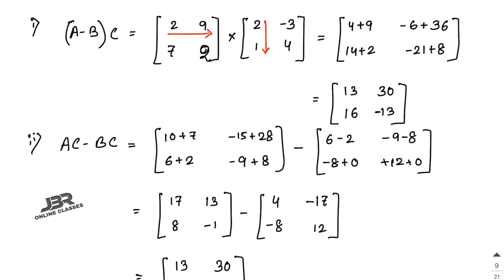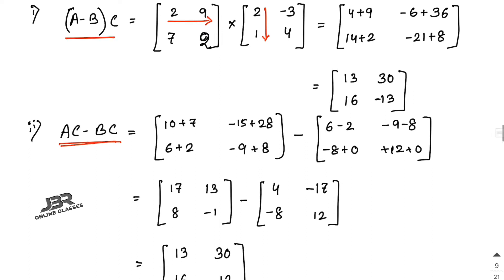For part 1, (A−B)C equals [13, 30; 16, −13], and AC − BC also equals [13, 30; 16, −13]. They are exactly equal — it is proved.